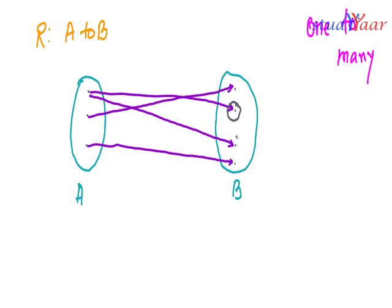Just look at over here — many elements are related to one single element of A. Because of this reason I call this a one-to-many kind of relation.